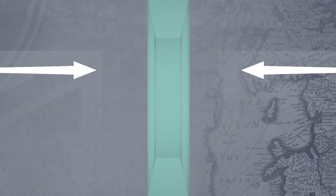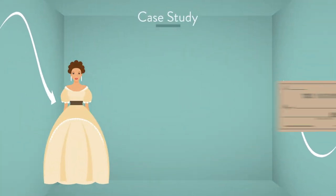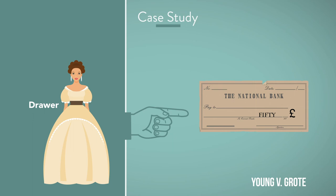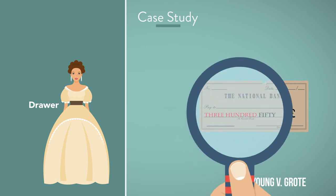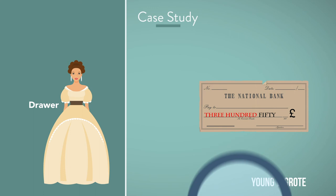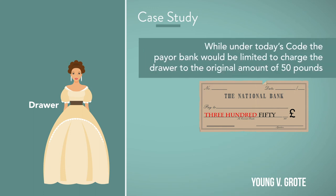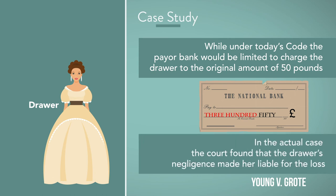For example, in an old English case, the drawer of a check wrote the word '50' in the middle of the amount line and left a space between the pound sign and the number 50. A thief added the words '300' to the amount line and added a 3 to the numbers, effectively making the check payable for 350 pounds. While under today's Code the payer bank would be limited to charging the drawer the original amount of 50 pounds, in the actual case the court found that the drawer's negligence made her liable for the loss.